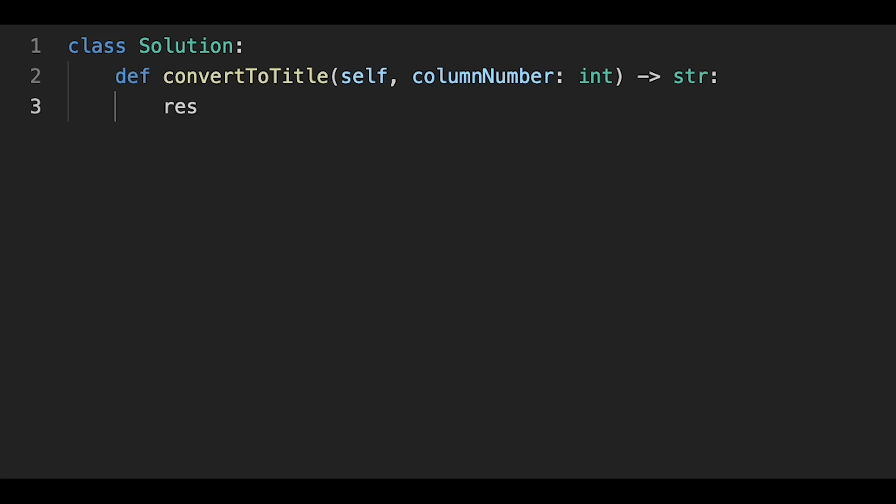Okay, so let's write the code. First of all, create a result variable and initialize it with empty string. And then after that, start looping while column number is greater than zero. So we continue looping, and first of all, as I explained earlier, column number minus equals one.